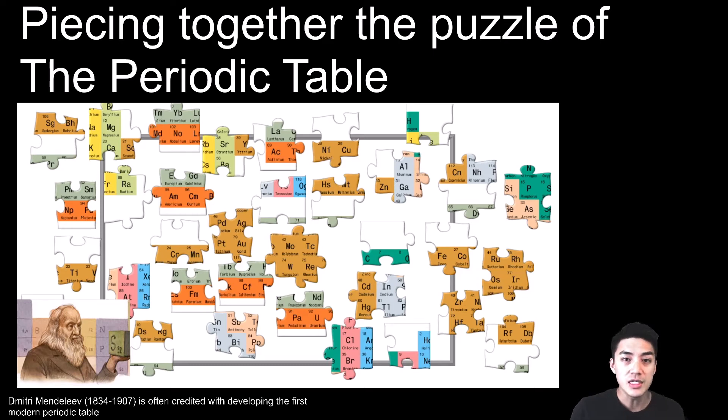The Periodic Table, with its neatly arranged rows and columns, is one of mankind's greatest achievements. It organizes the elements by their physical and chemical properties, and it's a logical way of understanding them. But for much of human history, it was like piecing together a jigsaw puzzle, as many of the elements were unknown at the time. Today, we'll learn about the history of the Periodic Table, and how they're arranged in specific groups and families. Let's figure out the Periodic Table piece by piece.